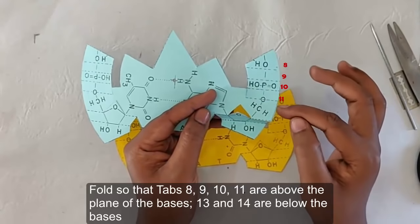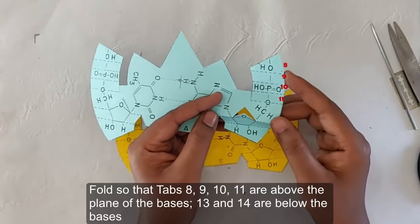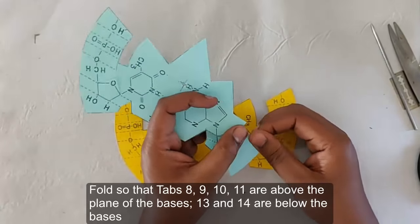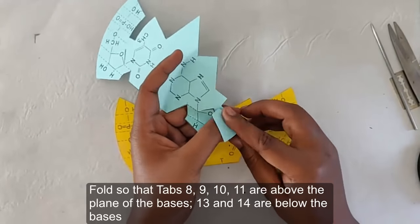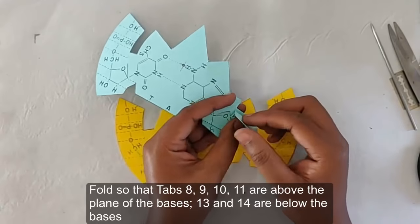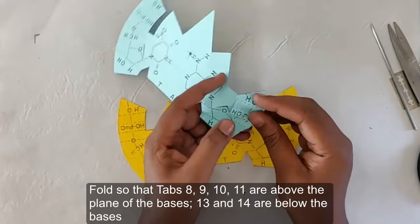Here 12 is the plane of the bases. So we have folded 13 and 14 below the plane of bases, and then 8, 9, 10, 11 above the plane of the bases.